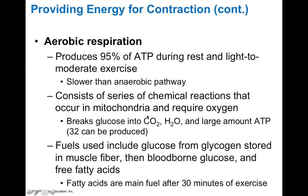Aerobic respiration consists of a series of chemical reactions that occur in the mitochondria and require oxygen. These chemical reactions break down glucose into carbon dioxide and water, yielding large amounts of ATP — about 32 ATP molecules per glucose through this pathway.